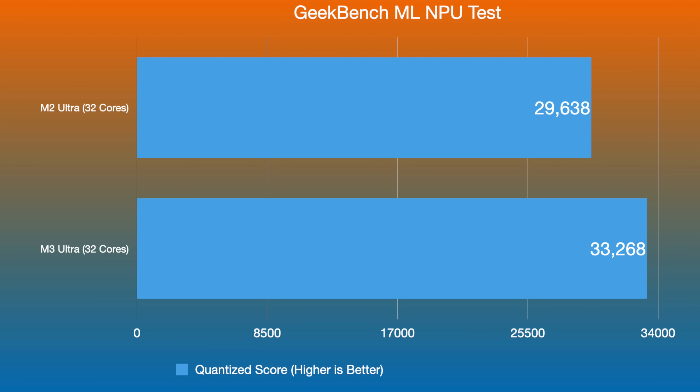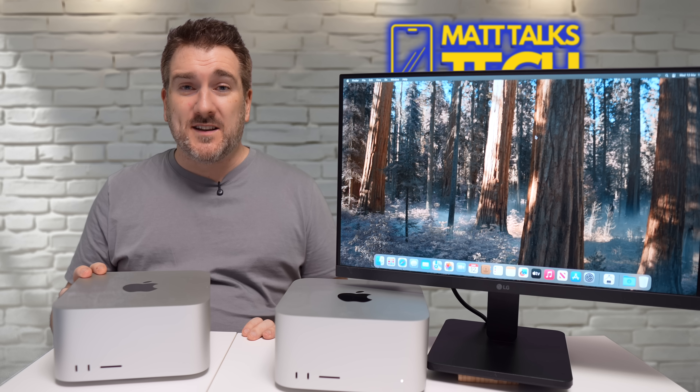The Neural Engine result was the one that shocked me most. I expected the M3 Ultra's neural engine to be way out in front, but that was not the case. We got 33,268 for the M3 Ultra compared to 29,638 for the M2 Ultra. I was expecting the M3 Ultra to be in the high 50,000s — but no, they were surprisingly close across all three of these AI tests.